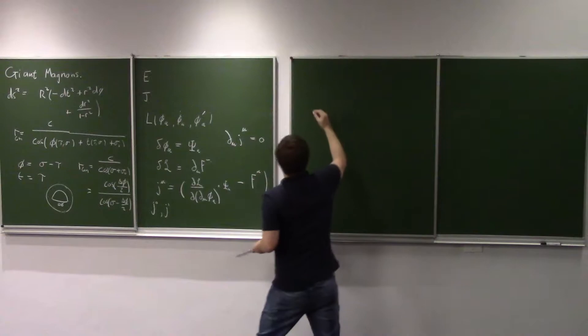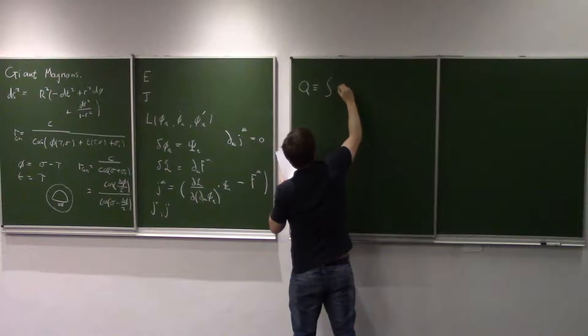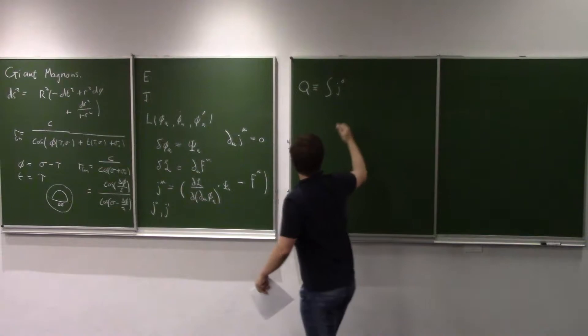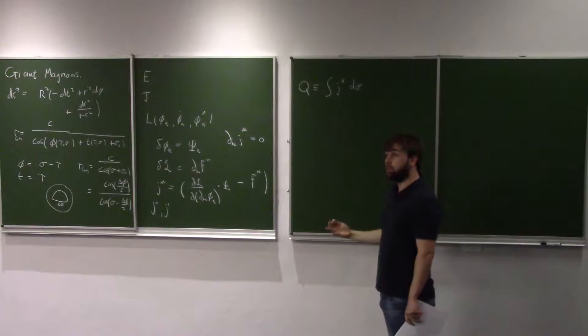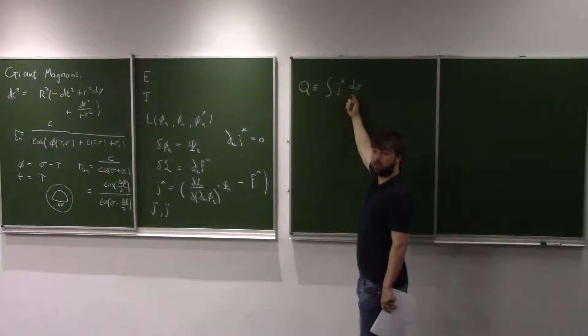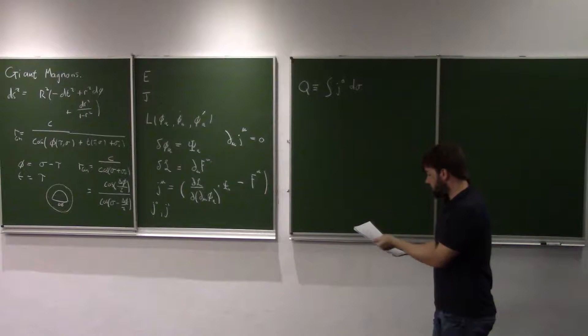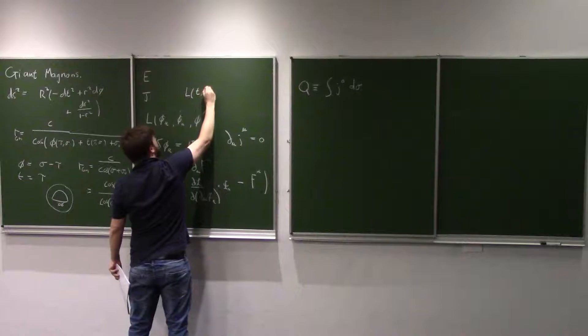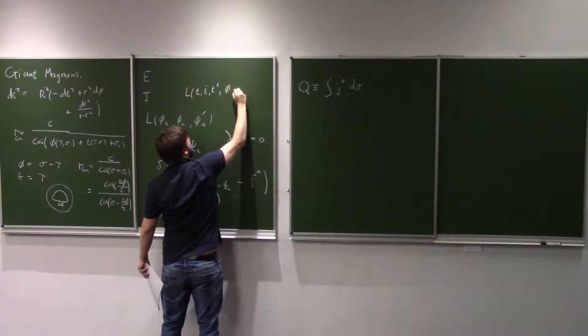The conserved charge Q is defined as the integral of the zeroth component J⁰ over all other parameters — in our case, integrated over σ. If you're in 3+1 dimensions you'd have a three-dimensional integral. That's how I compute the conserved charges. For a simple example: time translation, where δT = 1, meaning time goes to time plus a constant.